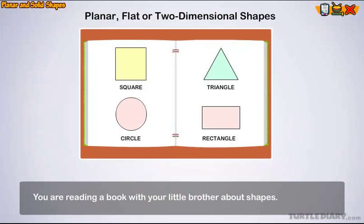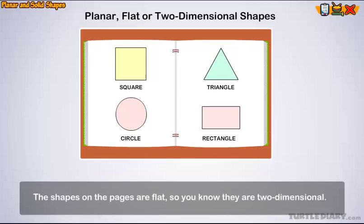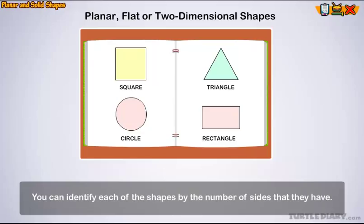You are reading a book with your little brother about shapes. The shapes on the pages are flat, so you know they are two-dimensional. You can identify each of the shapes by the number of sides that they have.